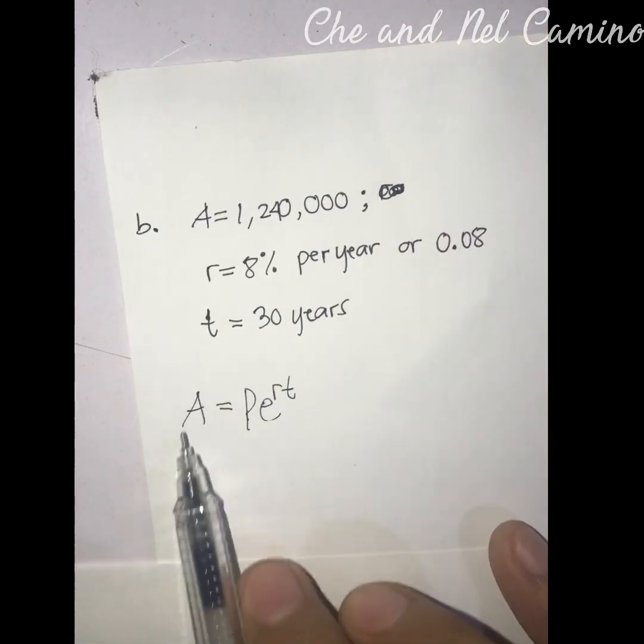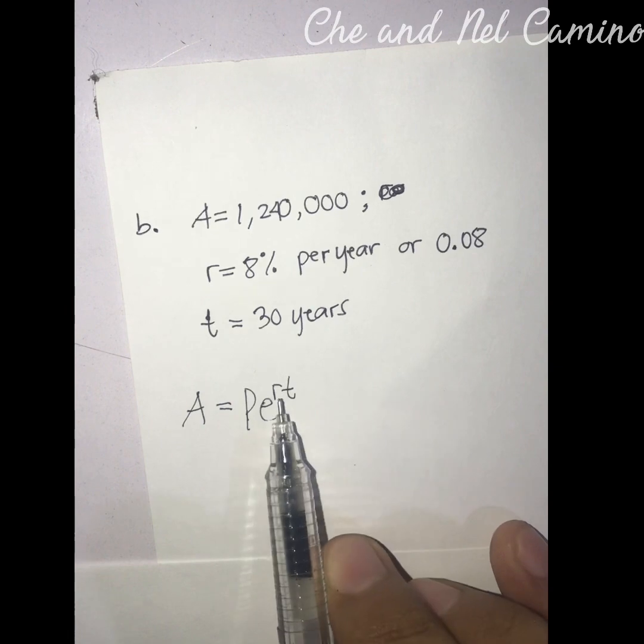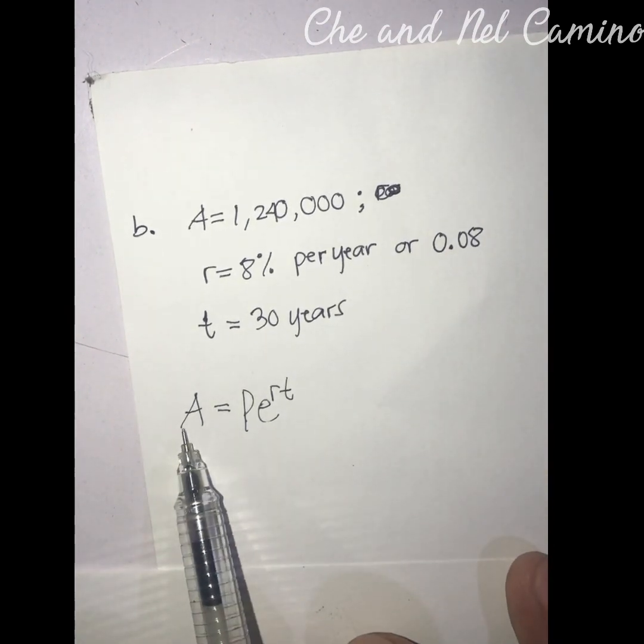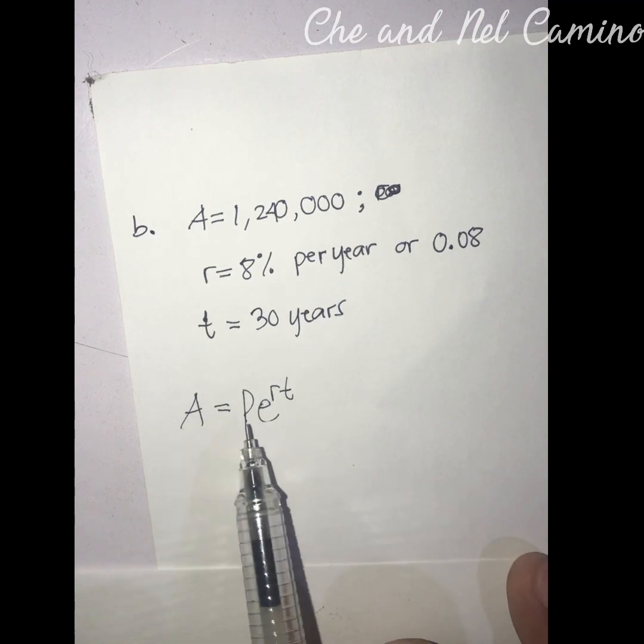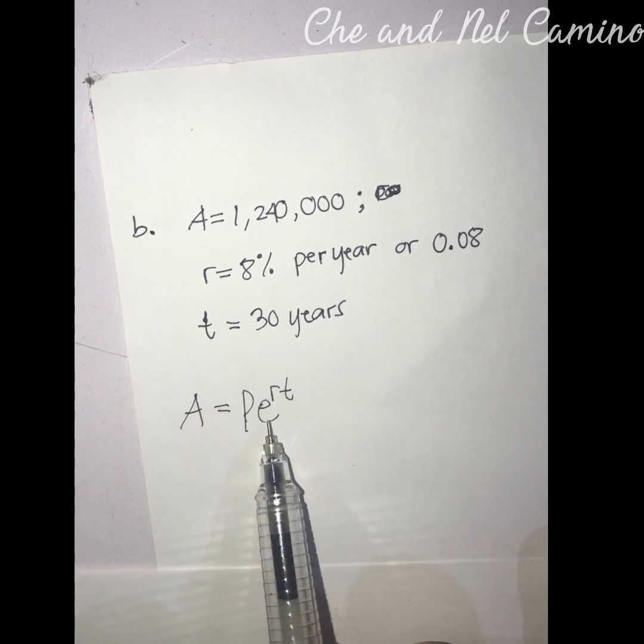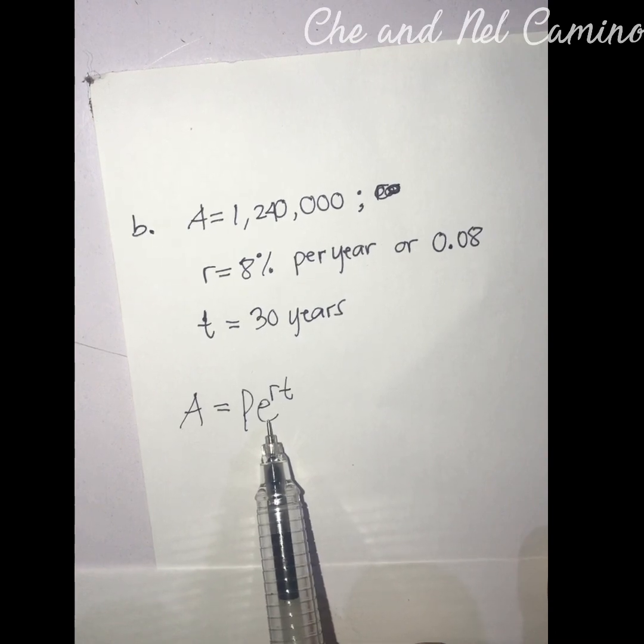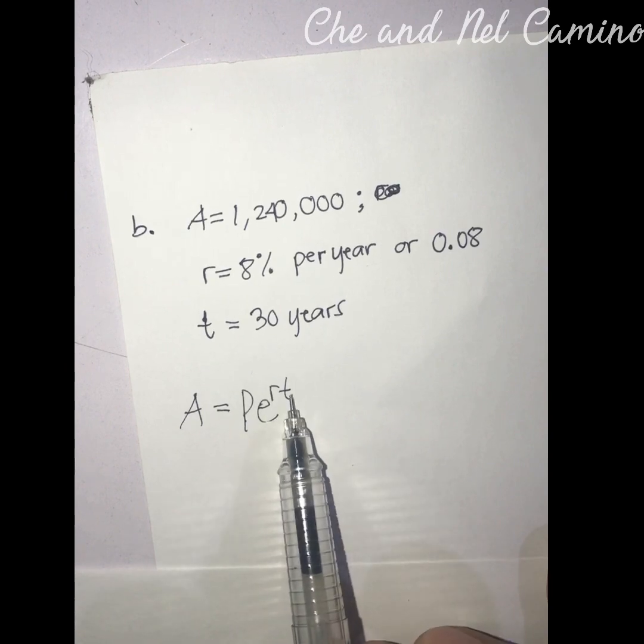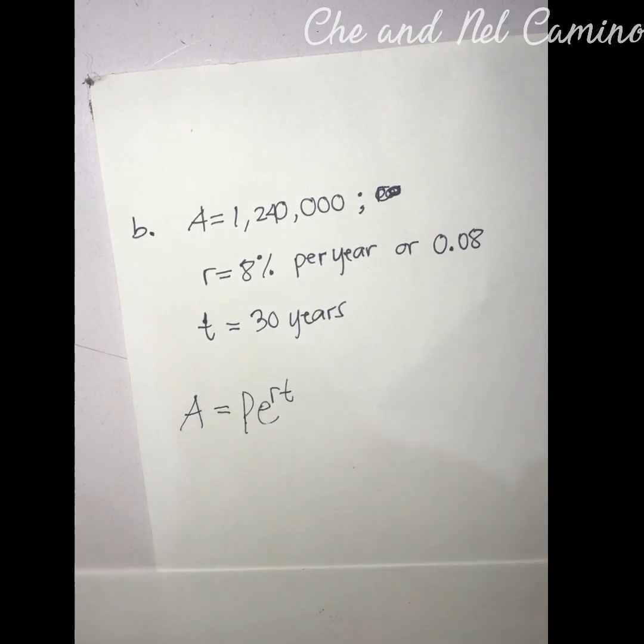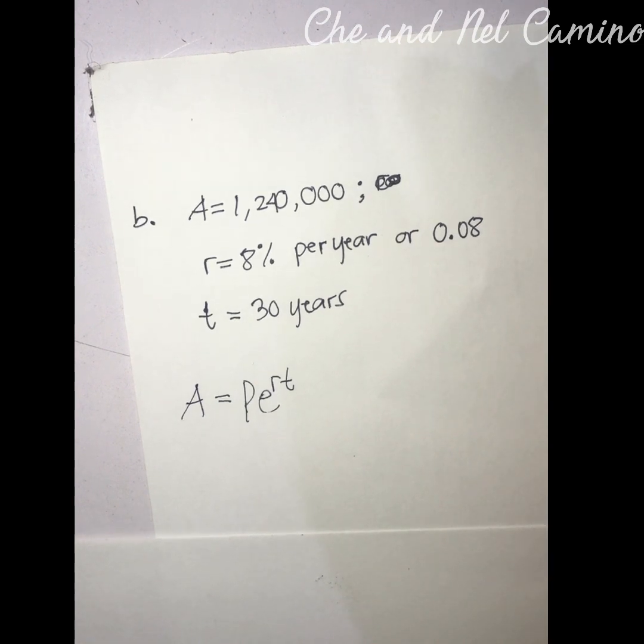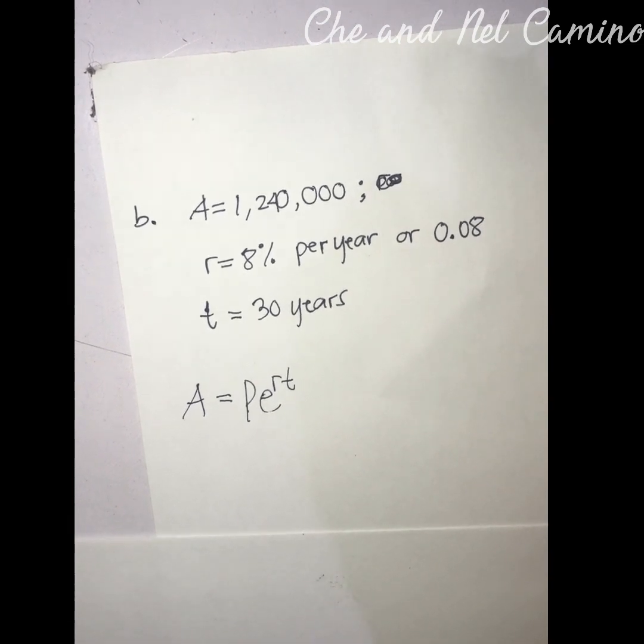A equals Pe^rt, wherein A is our future population, letter P is our current population, e is Euler's variable with an approximate value of 2.718, r is our rate, and t is our time period.